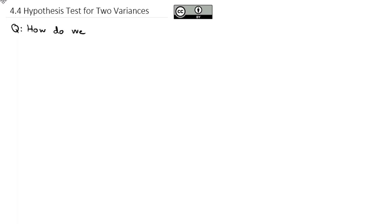Now that we've taken a look at how a hypothesis test can be conducted for a claim about a single variance, we can extend this to the next level and look at a hypothesis test on a claim of two variances. The question we're going to answer here is how do we compare two variances? Similar to one variance, we have to be careful if we're talking about standard deviation or variance, because the standard deviation is the square root of the variance. We need to introduce a new distribution that models a comparison of two variances, and this new distribution is what we will call the F distribution.